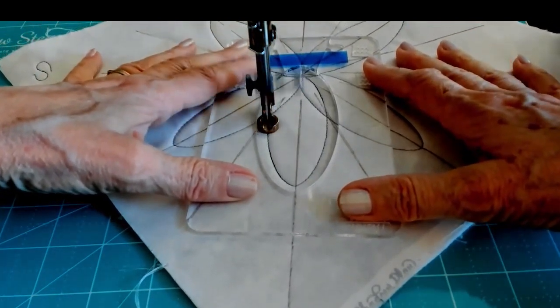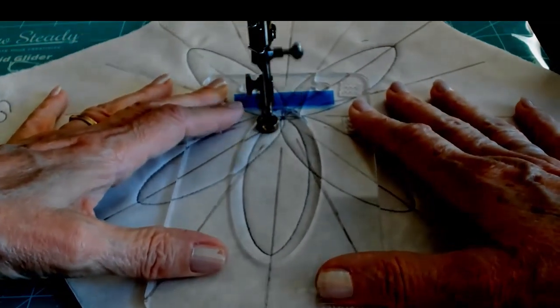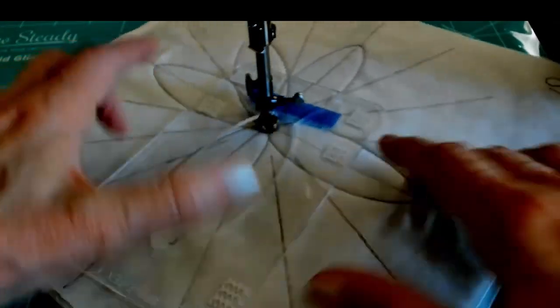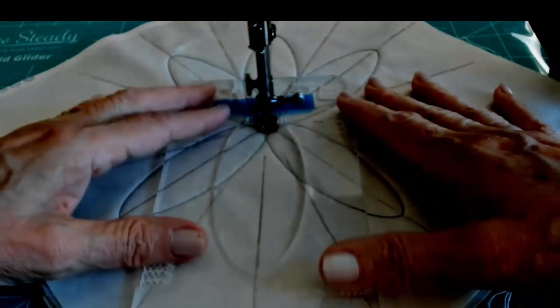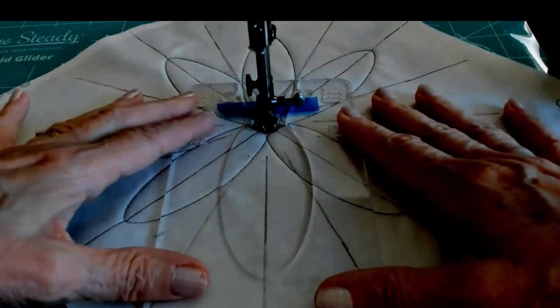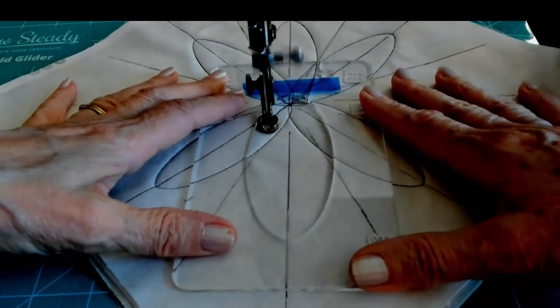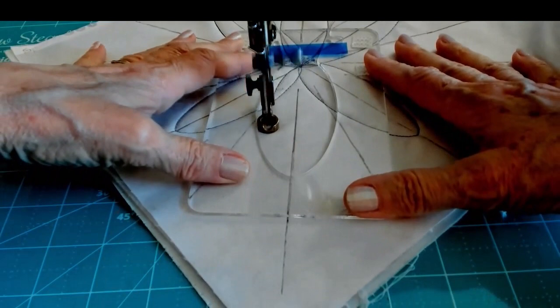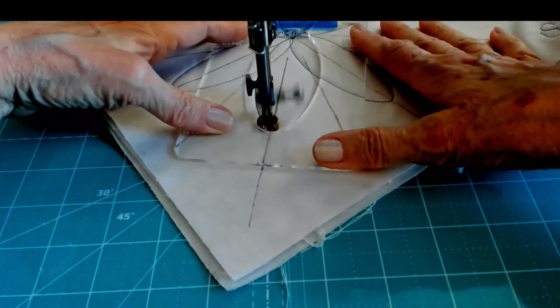So this is our fifth rotation. And we're going to, again, turn it to the opposite side. It's really easy to do when you're dealing with small blocks. When we work with larger blocks, what we want to do is we want to learn to rotate the template instead of the block. And that comes with time and practice as well.